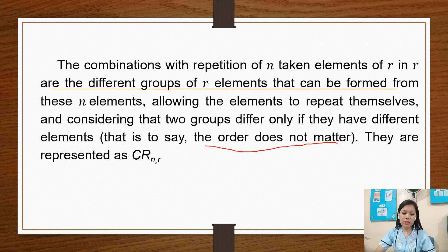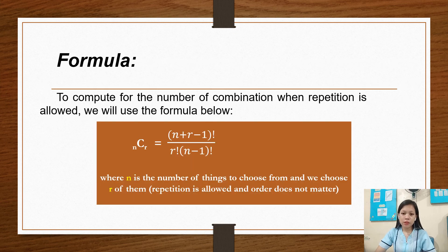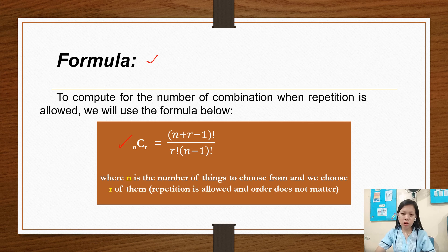They are represented as combination of repetition of N objects taken R at a time. The formula to compute for the number of combinations when repetition is allowed is: C(N,R) = (N + R - 1)! / (R! × (N - 1)!), where N is the number of things to choose from and we choose R of them. Repetition is allowed and order does not matter.